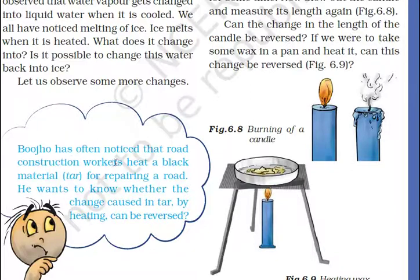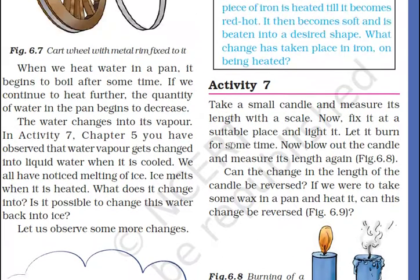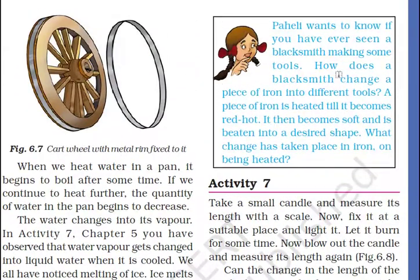Paheli has often noticed that road construction workers heat a black material — tar — for repairing a road. She wants to know whether the change caused in tar by heating can be reversed. Paheli also wants to know if you have ever seen a blacksmith making tools — how does a blacksmith change a piece of iron into different tools?